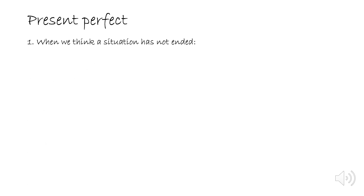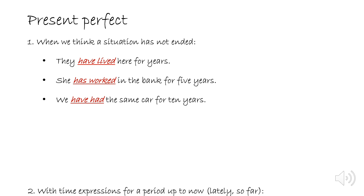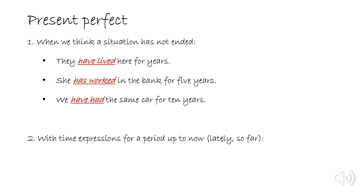Now let's look at how and when to use the present perfect. The first case is when we think a situation has not ended. For example: 'They have lived here for years,' 'She has worked in the bank for five years,' 'We have had the same car for ten years.' These examples show that the action or situation is still ongoing.